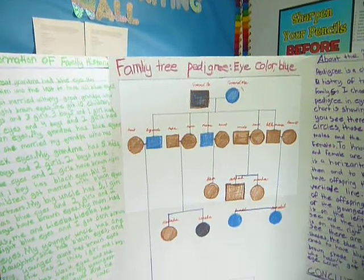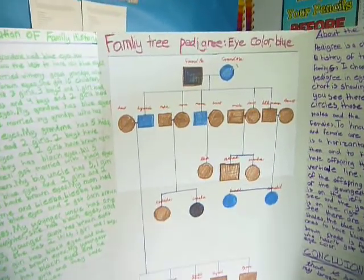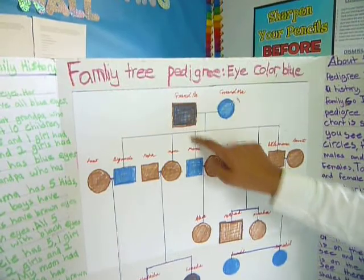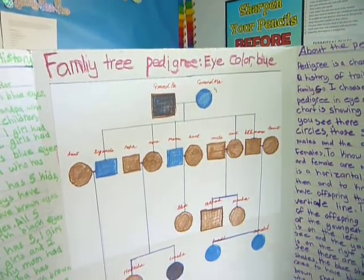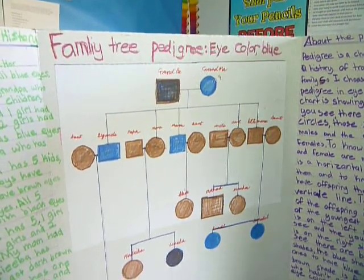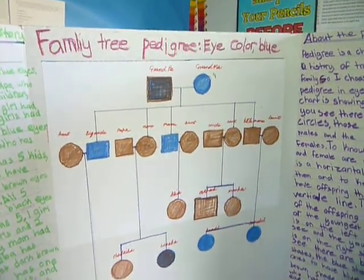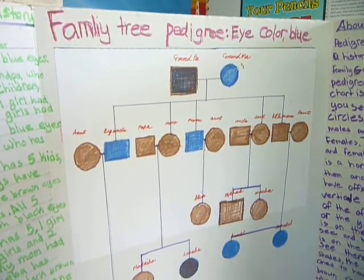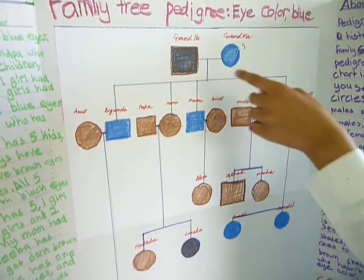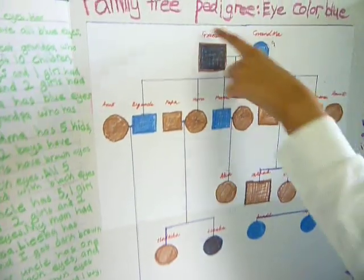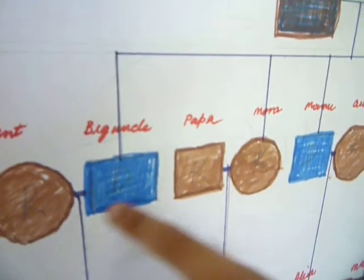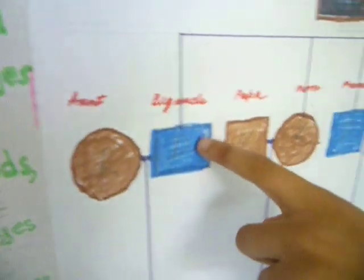The pedigree chart is showing phenotype. As you see, there are squares and circles. Those squares mean males — because it's my grandpa, my uncle, my papa, my big uncle. And the circles mean females.